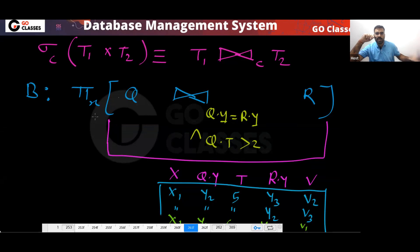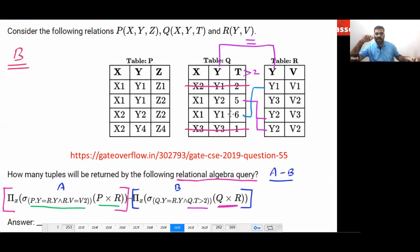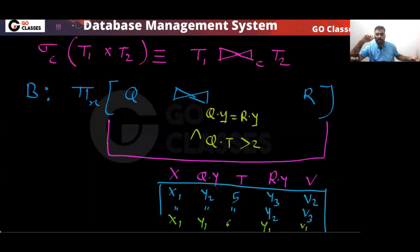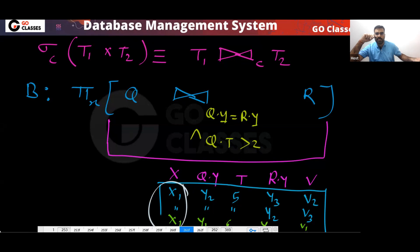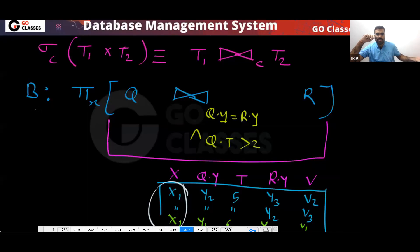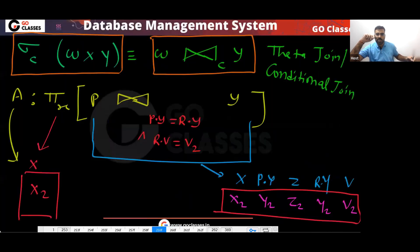In the GATE exam, will you write all these tuples? No — you will directly find the value of X. We are only interested in finding the value of X. In the gate exam, you have to save time. Your target is to find the value of X. So if you project X only, you will get X1. Here you are getting X1, and in query A you are getting X2.